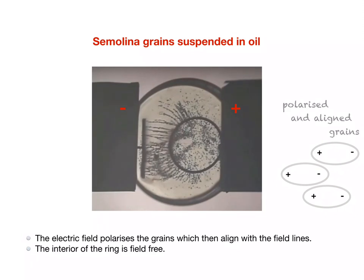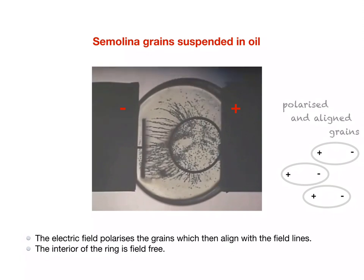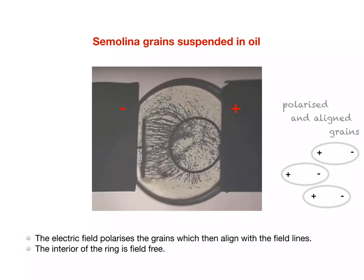Polarization means that one end of the elongated grain becomes positively charged and the other end becomes negatively charged. Inhibited somewhat by the inertia of the insulating oil that prevents direct current flow from the positive to the negative electrode, the pattern of the semolina grains shows the electric field lines. Interestingly, the interior of the ring remains field-free. This is known as the Faraday cage effect.